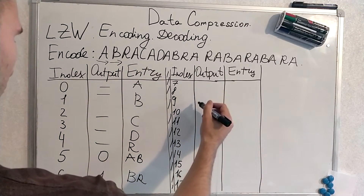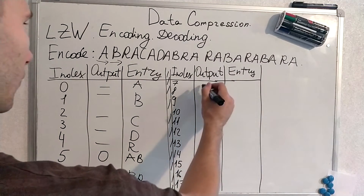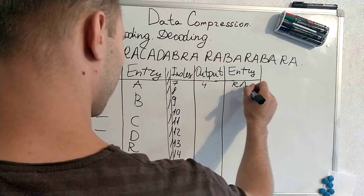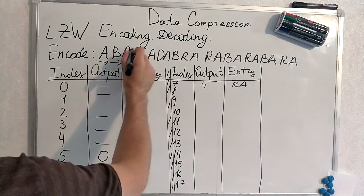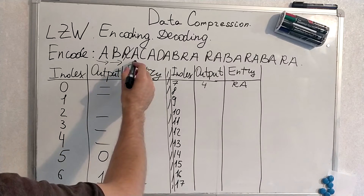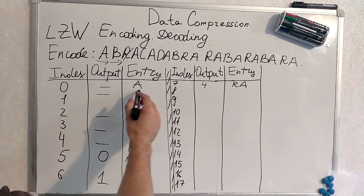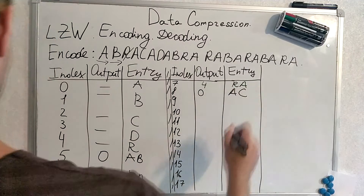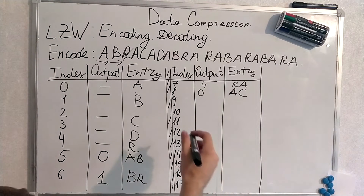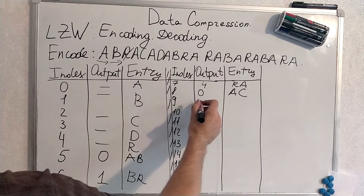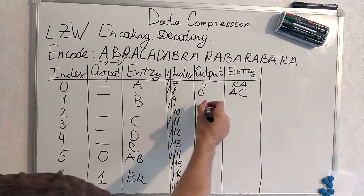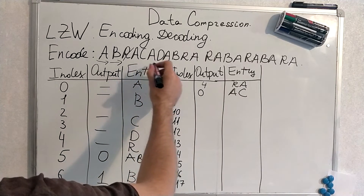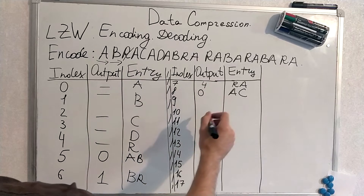We are on B, thus the output will be 4. We are on A; the output will be 0. Then A, C — I think the 8th index will be formulated, once again as 2.